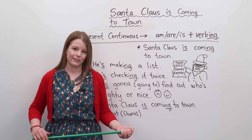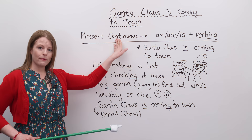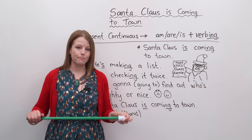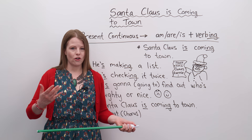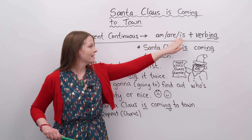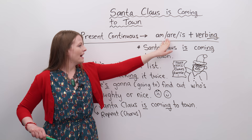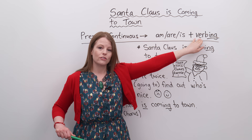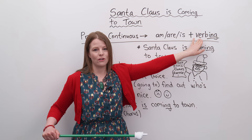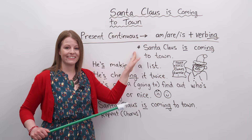Just to remind you, the present continuous tense is when you have your be verb conjugated — I am, you are, he is, she is, they are, it is — plus a subject, and then your action verb with -ing. The very title 'Santa Claus is Coming to Town' is a present continuous sentence. Santa Claus is the subject, 'is' is our be verb, and because Santa Claus is a 'he' we use 'is.' Then we have our verb 'come' and we add -ing to it, so it becomes 'coming to town.'